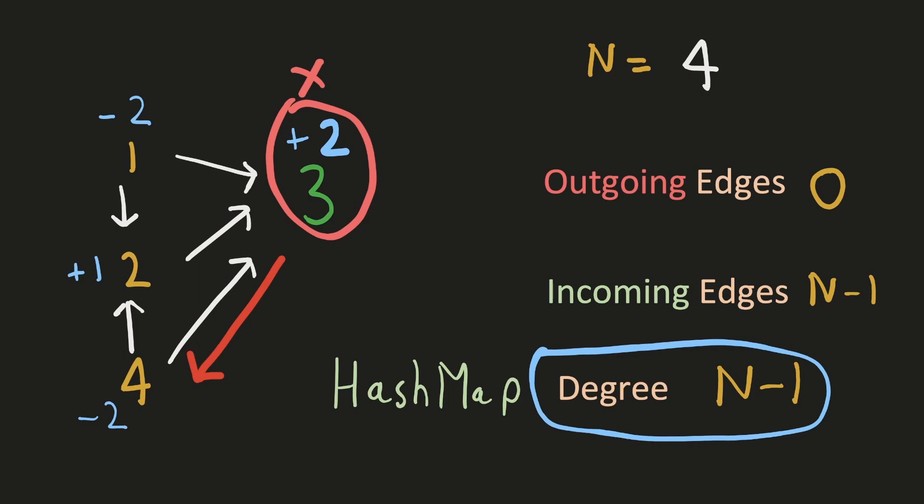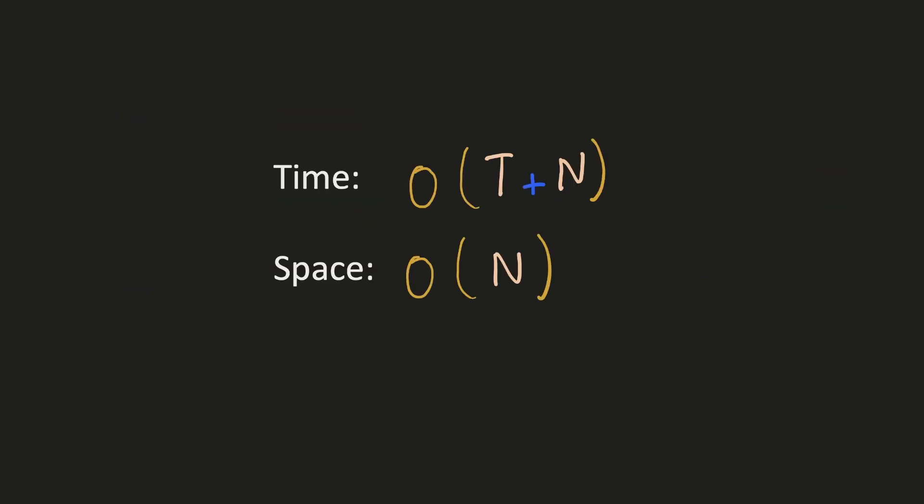We can use a hash map to count the degree of each person. The time complexity would be - we have to go through all the edges in the trust array to count the degree of each person, and after that check for each of the n people if anyone's degree is n-1. And the space complexity would be O(n) because we have to keep a hash map to count the degree of each person.